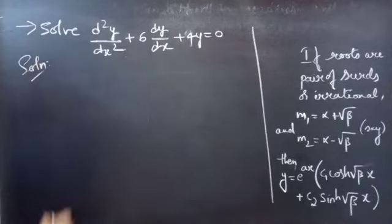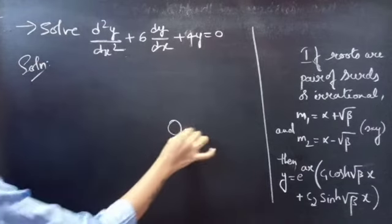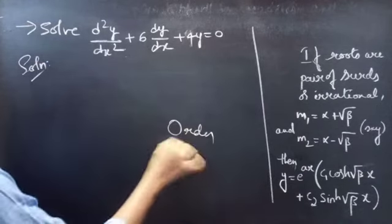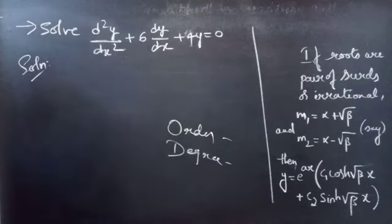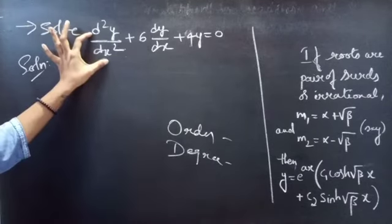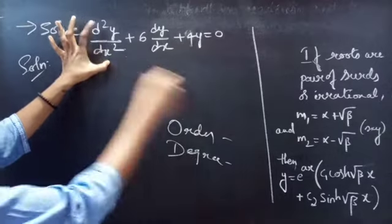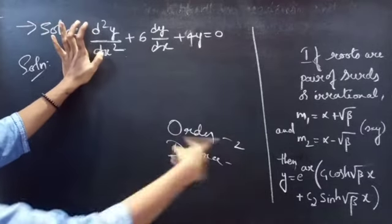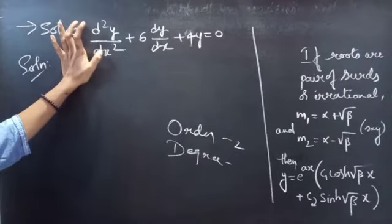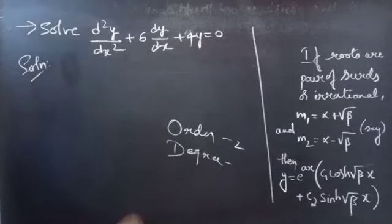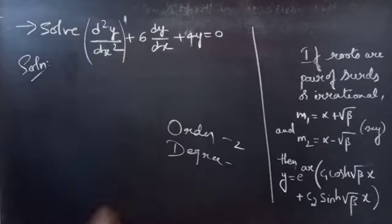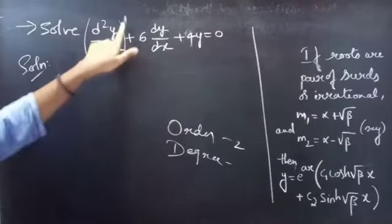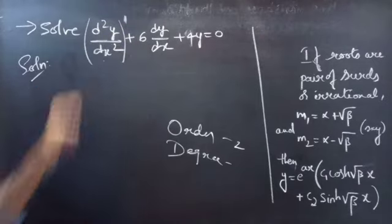Firstly, let's find the order and degree of the given equation. Here, d²y/dx² is the highest derivative, so our order will be 2. Since our order is 2, we will get two constants in the solution. The highest power of the highest derivative is its degree, and here that power is 1, so the degree is 1.